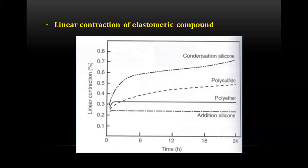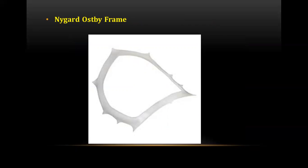The next question was about the linear contraction of elastomeric impression compounds, specifically condensation silicone. The linear contraction of condensation silicone is the highest, followed by polysulfide, then polyether, and then addition silicone.